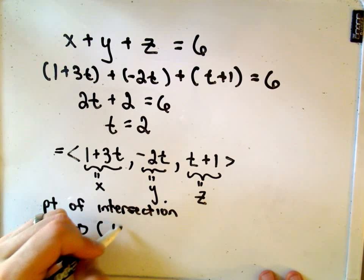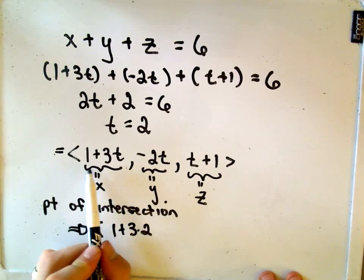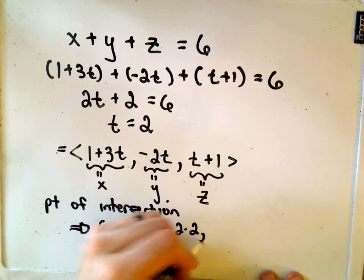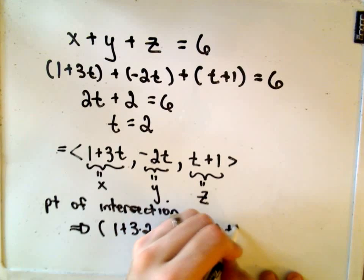Okay, so we would get 1 + 3 times 2, so I'm just plugging it into the parametric equation. Negative 2 times 2, and then 2 plus 1.